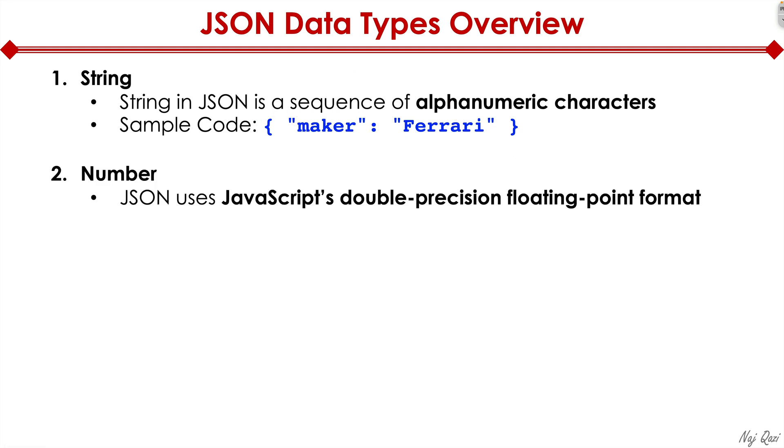The next data type is number. JSON uses JavaScript's double precision floating point format. Here's a sample code. Start of curly bracket, space. Once again, we don't need a space, but I'm adding a space to make it look neat. And by the way, spaces don't matter. White space, I should say, does not matter in JSON.